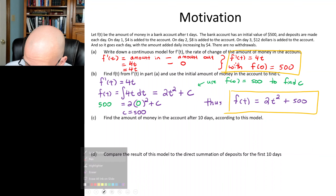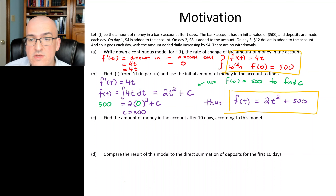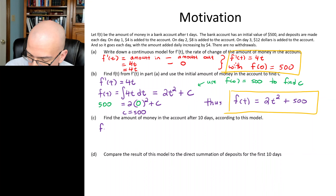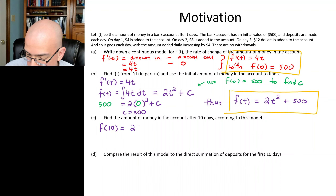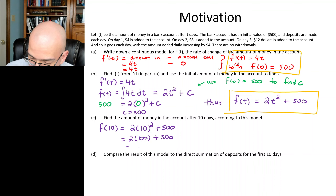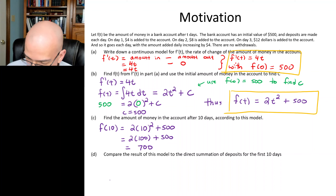Part C: according to this model, how much money is in the account after 10 days? t is the number of days that elapsed; all we have to do is plug in 10. So f of 10 is equal to 2 times 10 squared plus 500, which is 2 times 100 plus 500, which is 700. So $700 is in the account after 10 days.